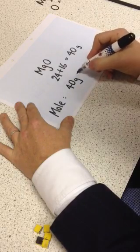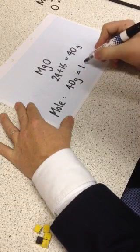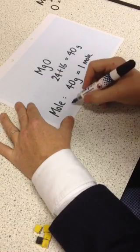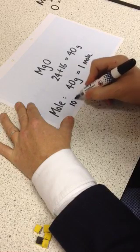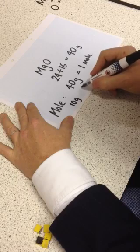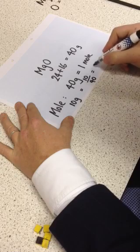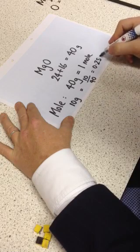If we know that 40 grams of Magnesium Oxide equals one mole, we can work out that 10 grams of Magnesium Oxide equals 10 over 40 equals 0.25 moles.